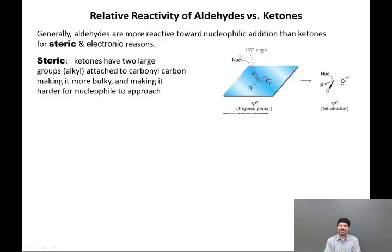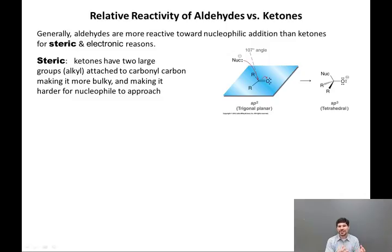As you can also see from the diagram, a starting structure that is sp2 hybridized, having only three groups bound to the carbonyl carbon, is replaced by an intermediate structure in which the hybridization is sp3, with tetrahedral geometry and four groups bound to what was formerly the carbonyl carbon. The increase in congestion at the carbonyl carbon means that sterics are important in this reaction.